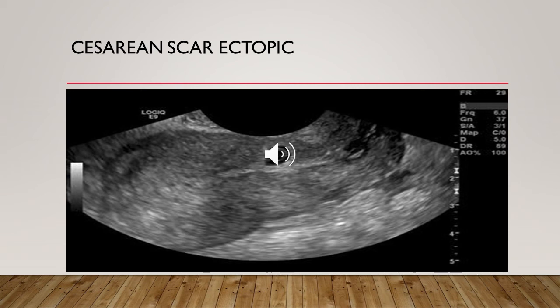With scar pregnancy there are two different types. The first type progresses into the uterine cavity, with the cell growing and developing with potential to reach a viable gestational age, but with the risk of massive bleeding from the implantation site and risk of placenta accreta or increta. The second type progresses deeper towards the serosal surface of the uterus, with risk of uterine rupture and hemorrhage.